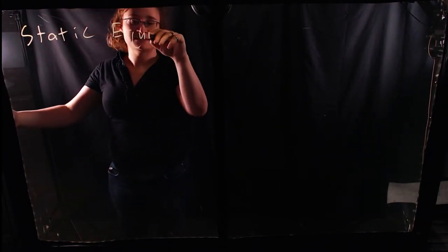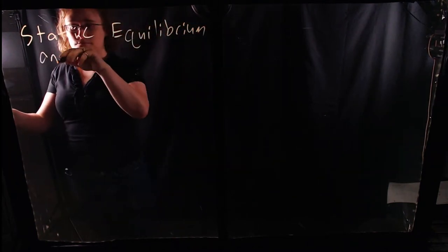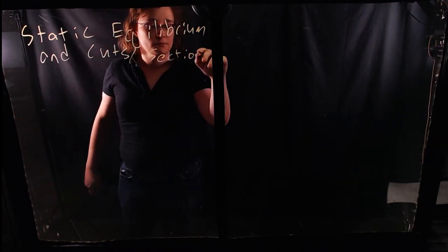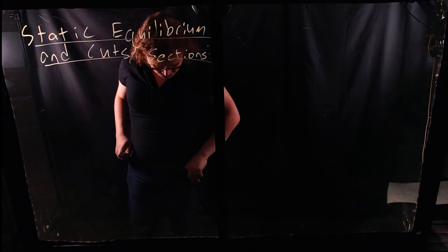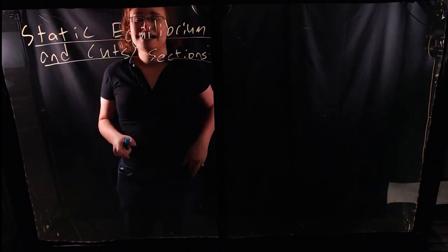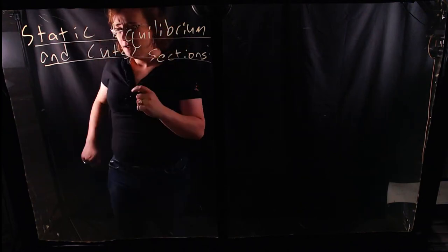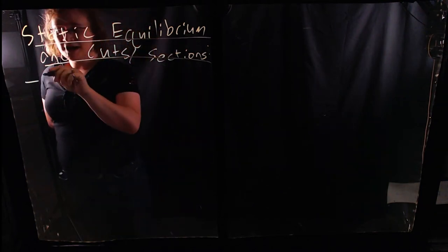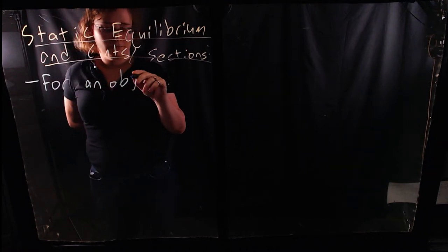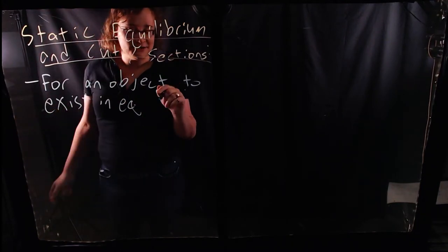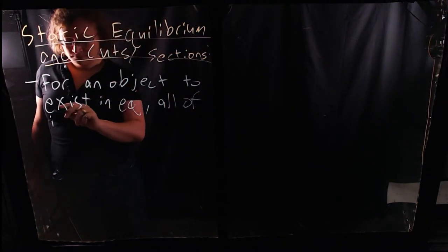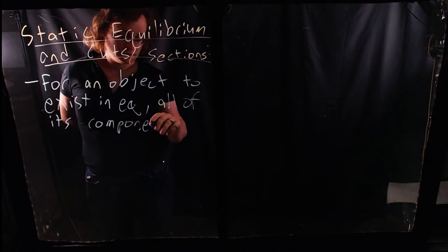Now let's look at static equilibrium and cuts or sections. We have seen that the summation of forces and moments on an object must come to zero — everything must be in balance. But there is also a very subtle variation: for an object to exist in equilibrium, all of its components or pieces must also be in equilibrium.